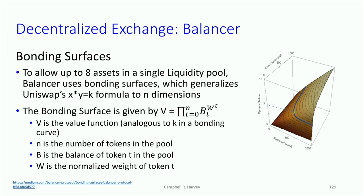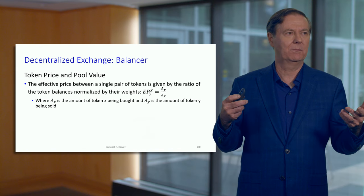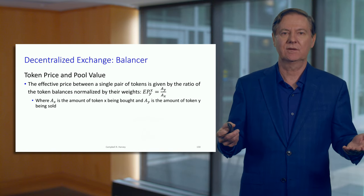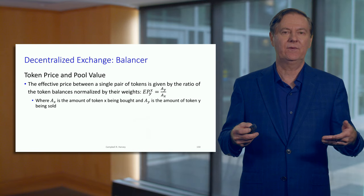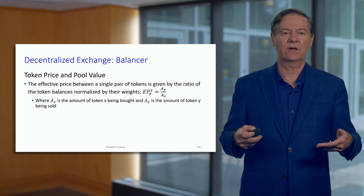Instead of X times Y, we can have X times Y times Z, and we can have differential sizes of supply determined by exponents on X, Y, and Z. This generalizes the Uniswap formula and allows a pool to have multiple assets with different sizes. This is basically a mechanism to determine exchange rates and figure out the pool value — all from this fairly simple but more general mathematical formula.